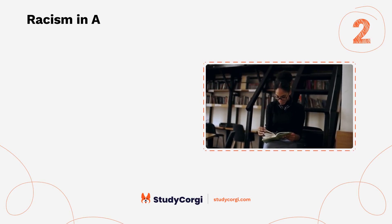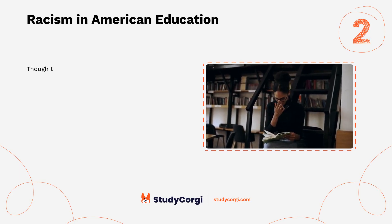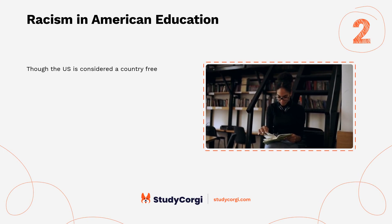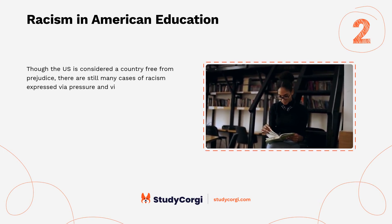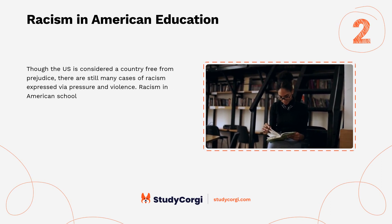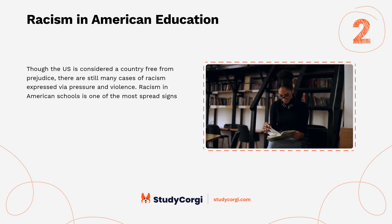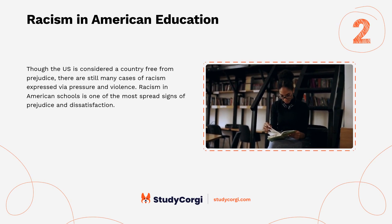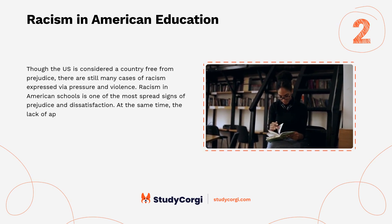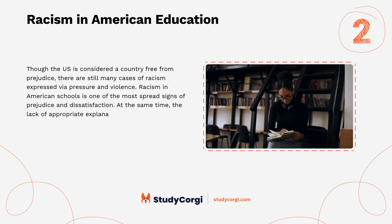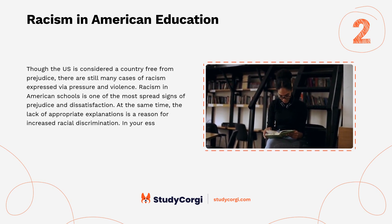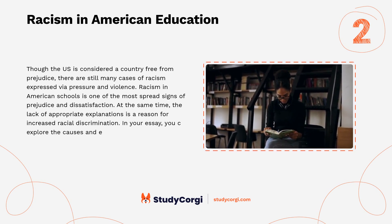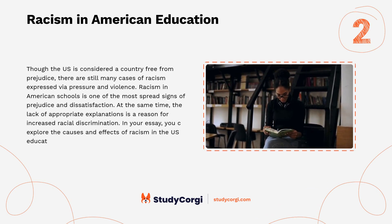Racism in American Education. Though the U.S. is considered a country free from prejudice, there are still many cases of racism expressed via pressure and violence. Racism in American schools is one of the most widespread signs of prejudice and dissatisfaction. At the same time, the lack of appropriate explanations is a reason for increased racial discrimination. In your essay, you may explore the causes and effects of racism in the U.S. educational system.